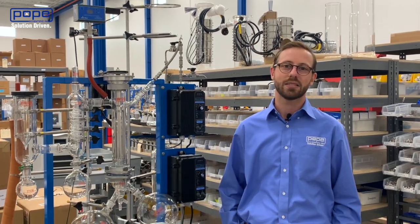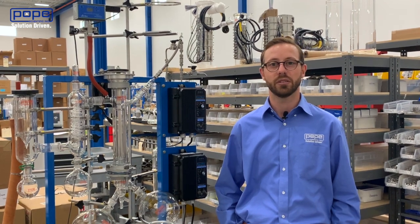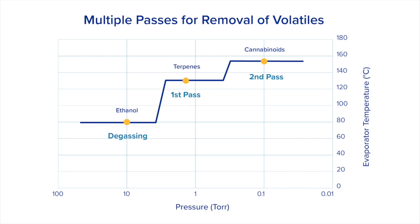In that case, it's likely that you have volatiles in your feed material causing your vacuum to raise. Specifically, when you're talking about the processing of cannabinoid extracts, you're going to be doing a two-pass operation. In the first pass, you're trying to remove your lighter materials such as terpenes. And then on your second pass, you're actually trying to distill the cannabinoids away from those heavy waxes, sugars, and fats.